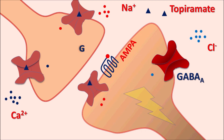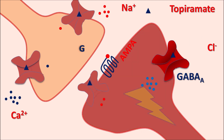Similarly, this drug can bind to GABA-A receptors at the non-benzodiazepine site, and instead of inhibition, it can activate these receptors, resulting in the opening of chloride channels. When chloride enters into the cell, it produces an inhibitory response. In this way, topiramate can control CNS excitation, which is why it is used as an anti-epileptic agent as well as a migraine prophylactic.